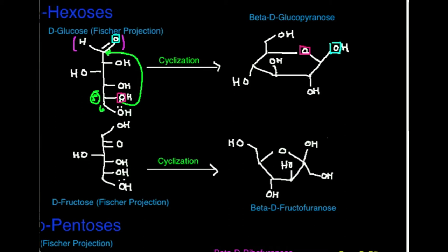One important thing: instead of just naming it beta-D glucose, I'm being specific and saying beta-D glucose pyranose. A pyranose is a carbohydrate that has a six-membered ring. Furanoses are carbohydrates that are stable in a five-membered ring.